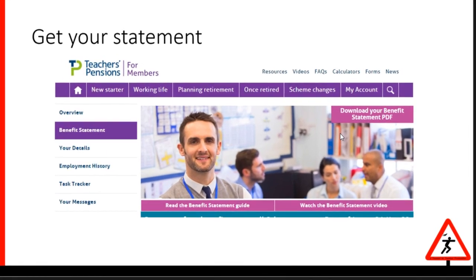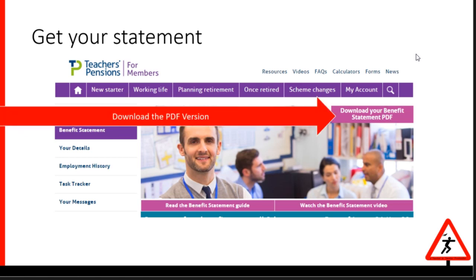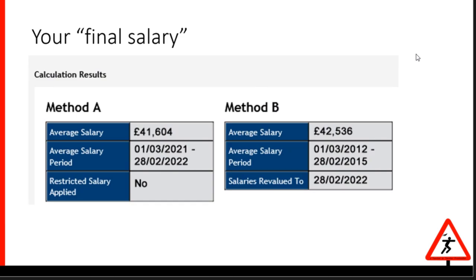At this point, I suggest you get your statement from the Teachers Pensions website. I find the easiest way to get everything you need is to download the PDF version of the statement. Once you have it, open it and look for the following two pages of information. This first piece of information is normally on about page five or thereabouts and looks something like this. It shows the two calculations for your final salary, and you will always get the best of Method A or Method B.